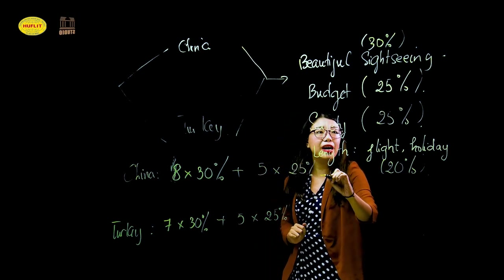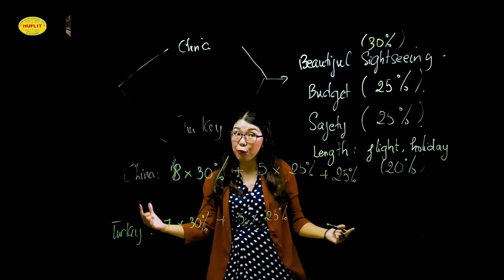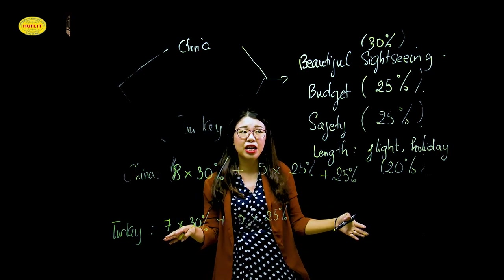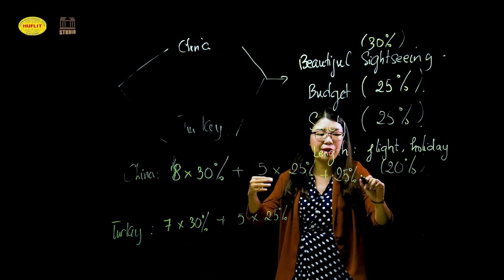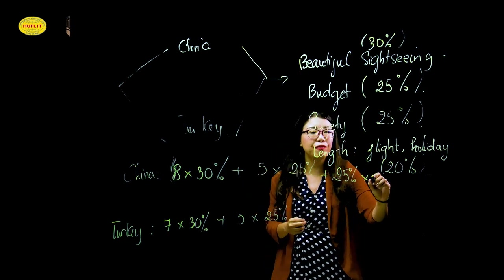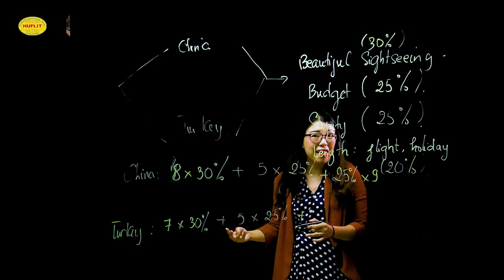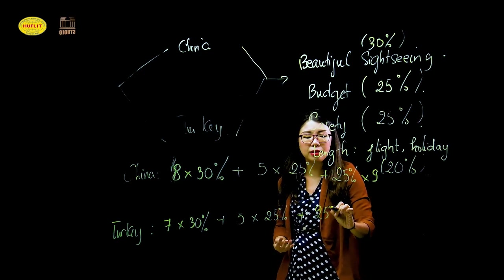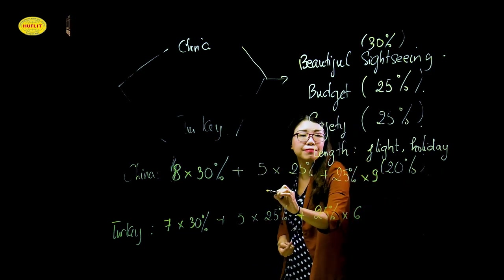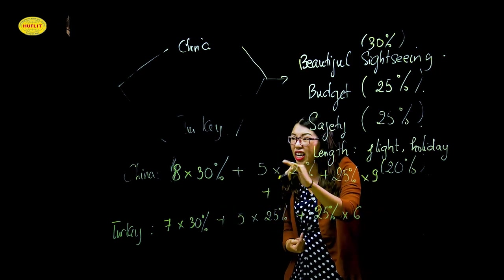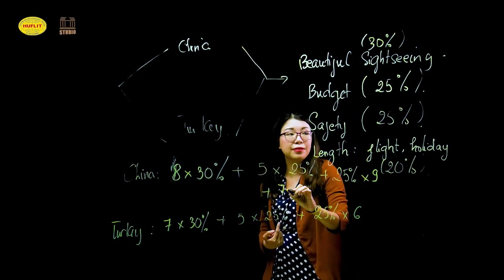Both China and Turkey get a 5 for budget, times 25%. For safety, before the outbreak, China seemed a very stable and safe country, so we give it a 9, times 25%. Turkey not so good — there were security concerns — so it gets a 6, times 25%. For land, China gets a 7 times 20%, because the flight is shorter than to Turkey.